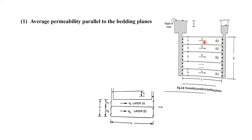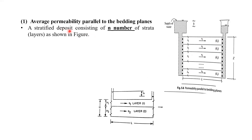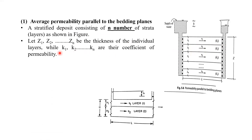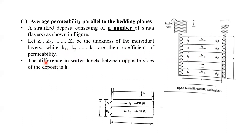V1, V2, V3 are the velocities of flow parallel to the bedding plane for each layer. A stratified deposit consists of n number of strata — strata means layers — with thicknesses Z1, Z2, Z3, and coefficient of permeability K1, K2, K3 and so on. The difference in water levels between opposite sides of the deposit is H.